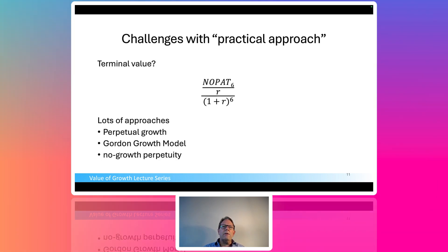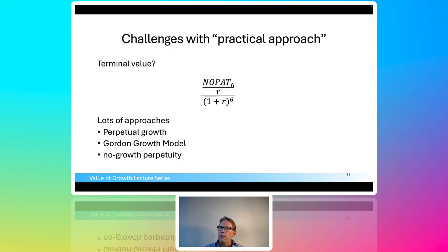The practical challenge, the practical approach of dealing with the terminal value is generally a formula. It looks something like this. We take the NOPAT in year six. We capitalize that. We assume it lasts forever. And then we discount that back for time and uncertainty for those six years. It usually works that way. And you'll get formulas that are called the perpetuity growth formula. I'm actually going to use that in a minute. The Gordon growth model, which takes growth into account or no growth perpetuity.